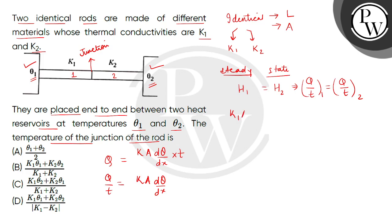So K1 A1, now A1 and A2 are the same, so we don't need the subscript. Now Theta1 and the junction temperature we have to consider Theta. So the temperature difference is Theta1 minus Theta, divided by the length of the first rod. This equals K2 A2, Theta minus Theta2, divided by L2.